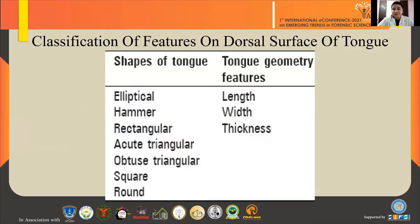Under the classification of tongue print, it can be classified on the basis of shapes and geometrical features on the dorsal surface of the tongue. Under the shape category, we can classify it as elliptical, rectangular, triangular, round, and square, whereas in the geometrical features we can consider factors like length, width, and thickness.